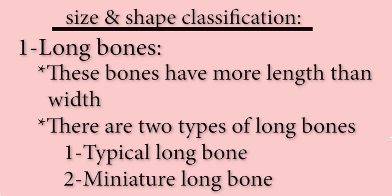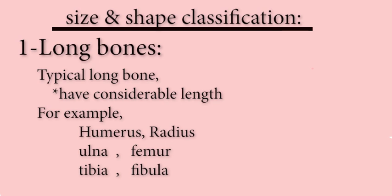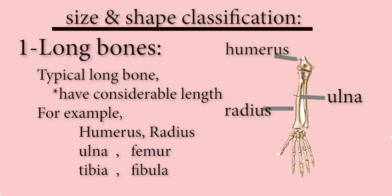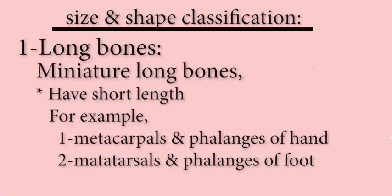There are typical long bones and miniature long bones. Typical long bones have considerable length; examples include humerus, radius, ulna, femur, tibia, and fibula. Miniature long bones have shorter length; for example, metacarpals and phalanges of the hand, and metatarsals and phalanges of the foot.